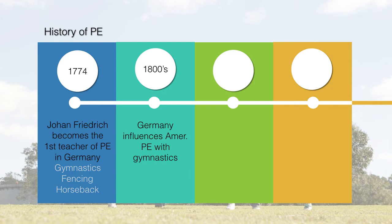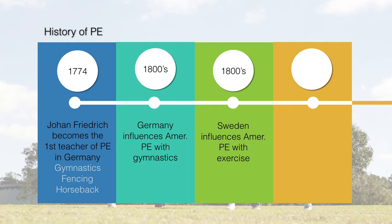A few years later in the 1800s, Americans started to have programs influenced by the Germans and the Swedes. Germany and Sweden both focused on different approaches to learning and instruction, mainly geared toward physical development of the body. For Germany, it mainly had to do with gymnastics — a very rigid, organized approach expected of people. The idea was a sense of full body understanding, incorporating movement into regular life.